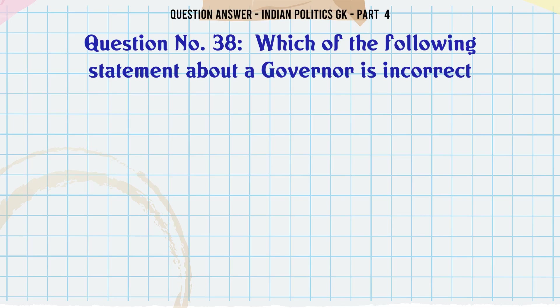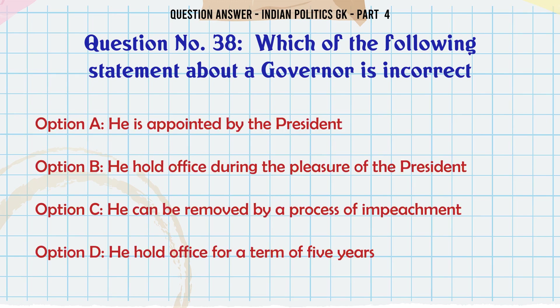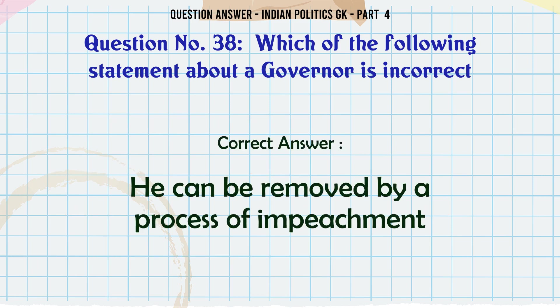Which of the following statements about a Governor is incorrect? A. He is appointed by the President. B. He holds office during the pleasure of the President. C. He can be removed by a process of impeachment. D. He holds office for a term of five years. The correct answer is: he can be removed by a process of impeachment.